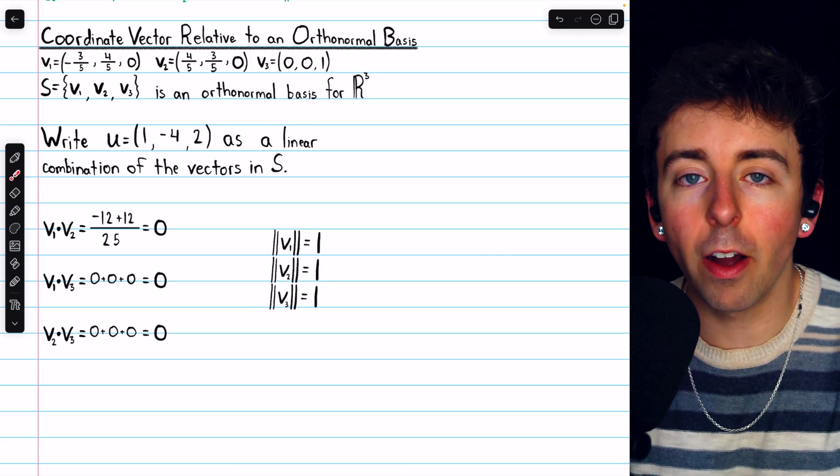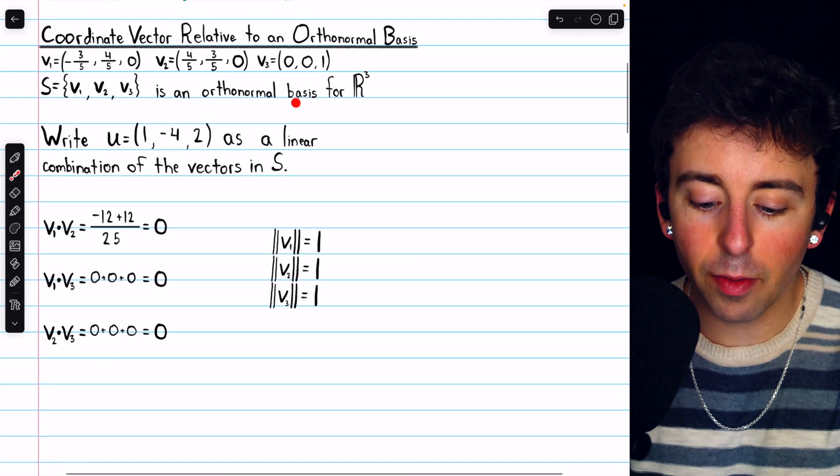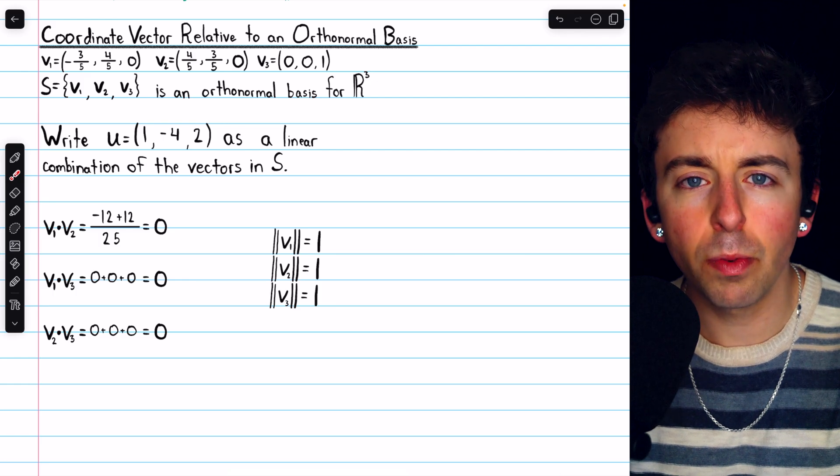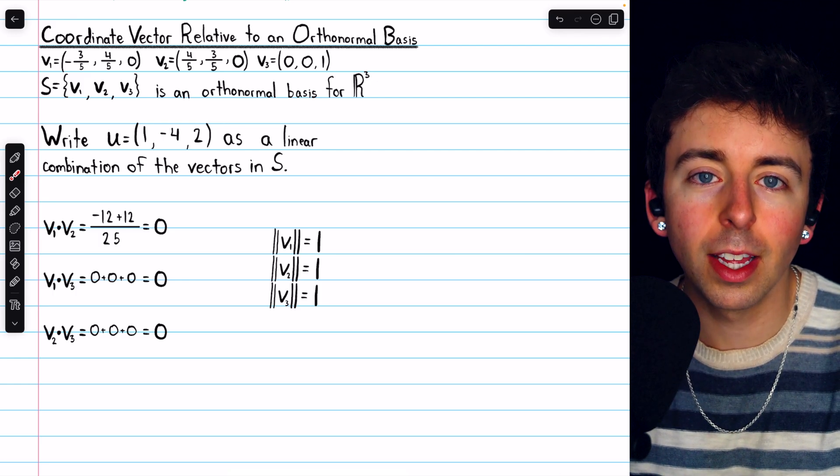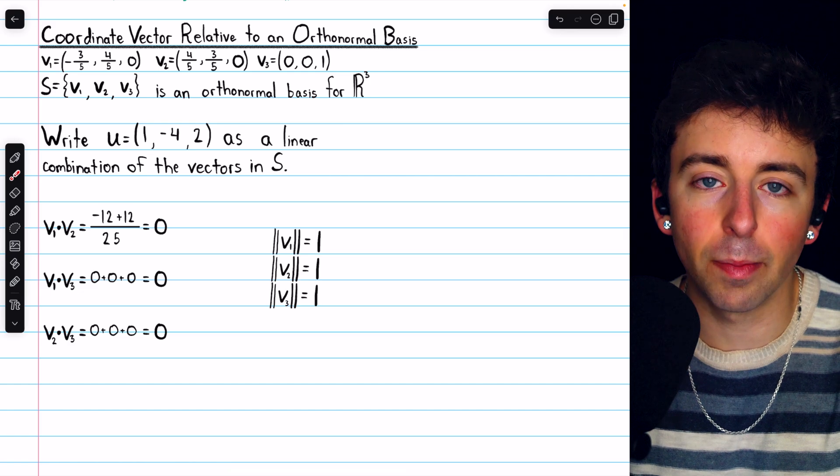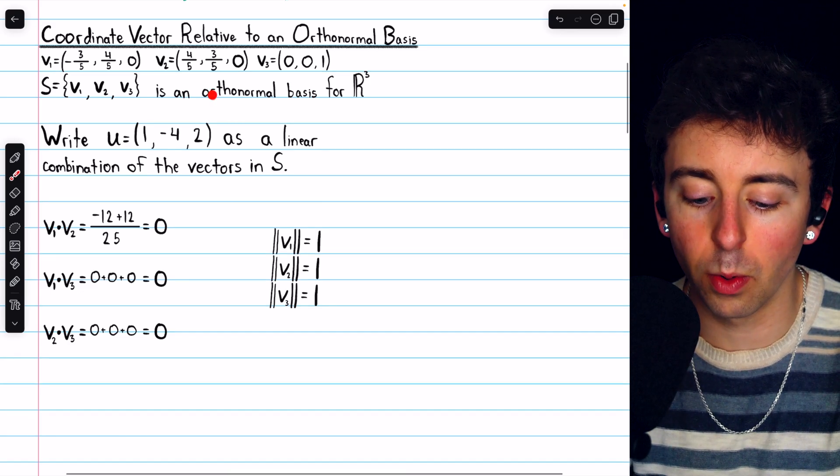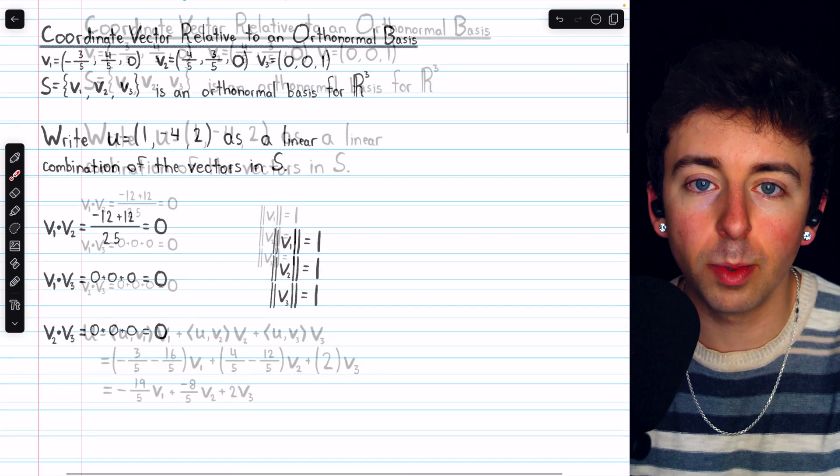Very similar computation for v2, and v3 is obviously a unit vector. So these vectors are orthogonal unit vectors. We know that they form a basis because, as we previously proved, link in the description, a set of orthogonal vectors is linearly independent. So for sure, this is an orthonormal basis for R cubed.